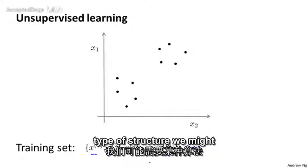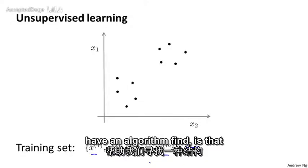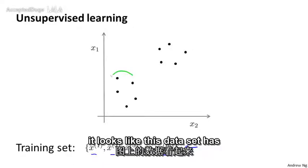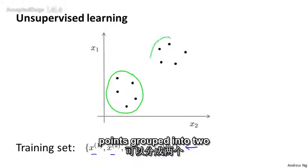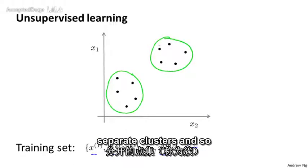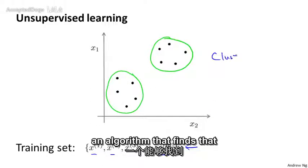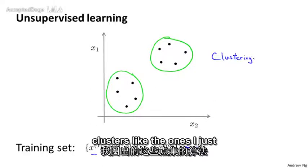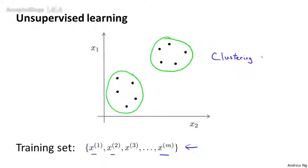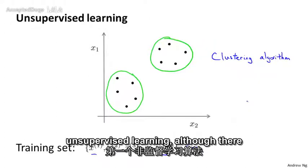Given this data set, one type of structure we might have an algorithm find is that it looks like this data set has points grouped into two separate clusters. And so an algorithm that finds clusters like the ones I've just circled is called a clustering algorithm. And this will be our first type of unsupervised learning.